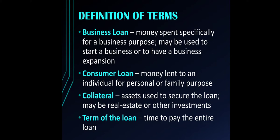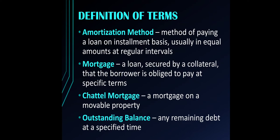For consumer loan, this type of loan means that the money lent to an individual is for personal or family purposes. Collateral refers to assets used to secure the loan — this could be in the form of real estate or other investments. The term of the loan tells you the time to pay the entire loan, usually measured in years. The amortization method is the method of paying a loan on an installment basis, usually done in equal amounts at regular intervals.